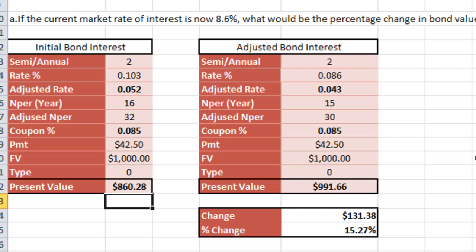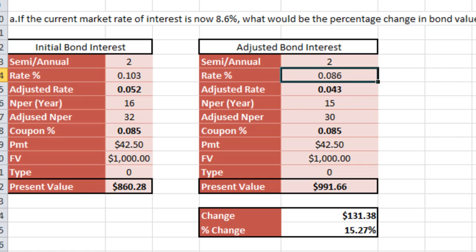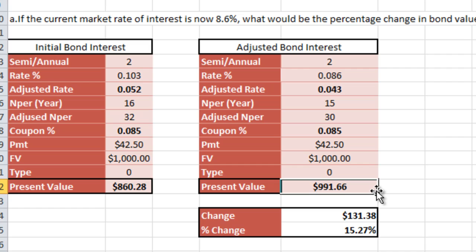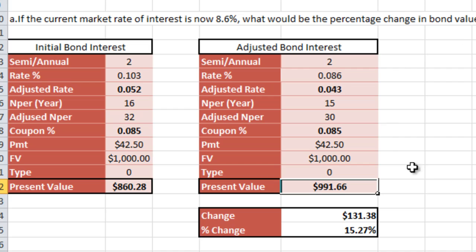Our question is: if the current market rate of interest is 8.6%, what would the percentage change be? We're going to copy this whole section over and adjust the rate down to 0.086. As we can see, this increases our present value up to $991.66.